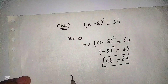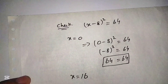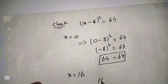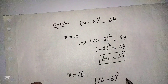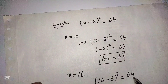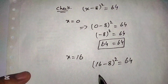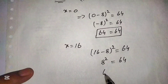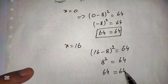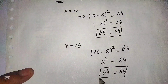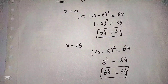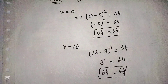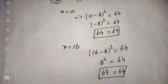To verify the second solution, we put x = 16 into the given equation: (16 - 8)² = 64. Simplifying, we get 8² = 64, and 64 = 64, which again verifies our second solution. So x = 0 and x = 16 are the correct solutions for the given equation.